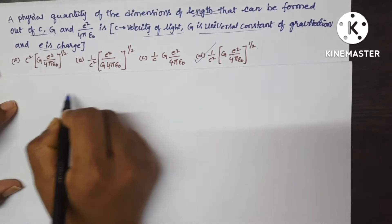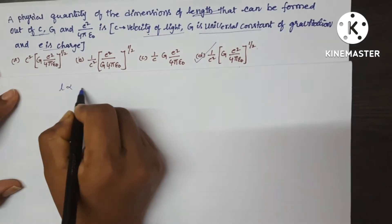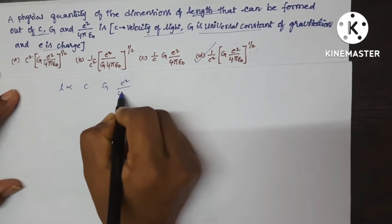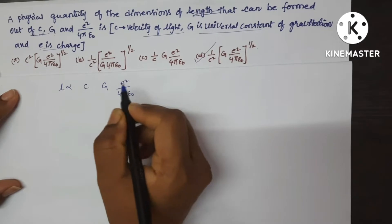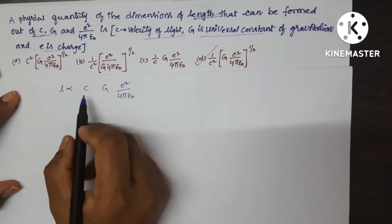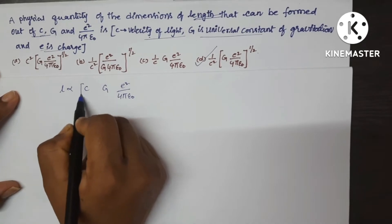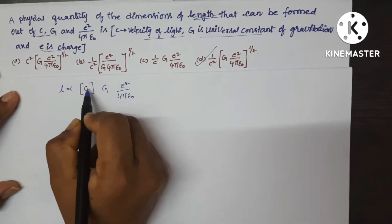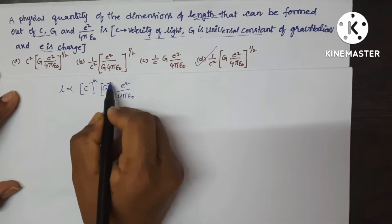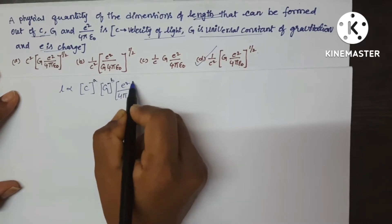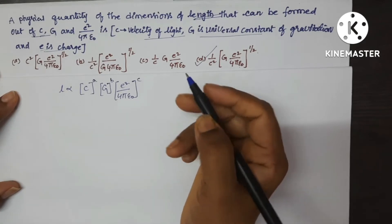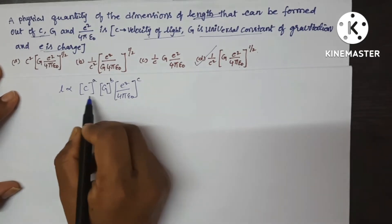Length depends upon C, G, and also E² upon 4πε₀. We have to find the dimensions of all of these. Let C^A, G^B, and (E²/4πε₀)^C give us the length. Let's find the dimensions of all of these.